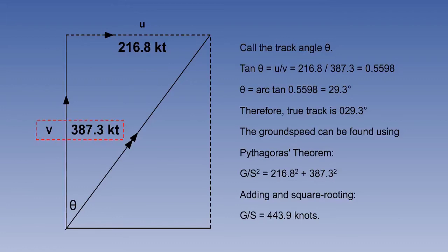Suppose, for instance, that we are in a jet airliner, and our northerly velocity V is 387.3 knots, and our easterly velocity U is 216.8 knots. Then our vector diagram is like this. Although we carry out addition of two vectors, the aircraft does not travel first north then east. What happens, of course, is that it is flying up the resultant, and the resultant of V and U is the vector of track and ground speed.